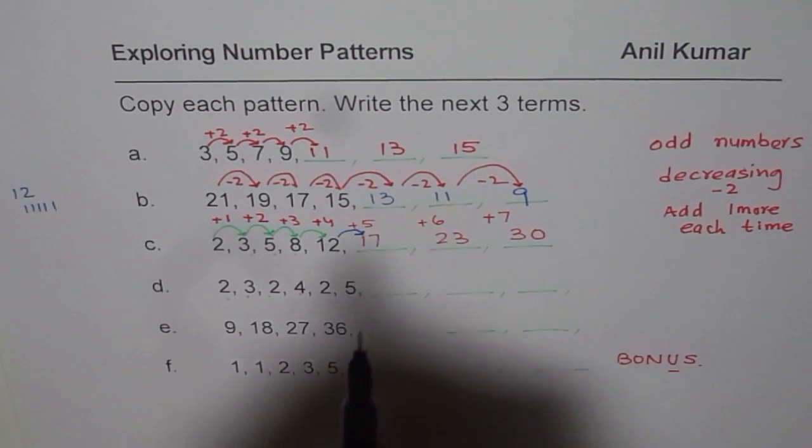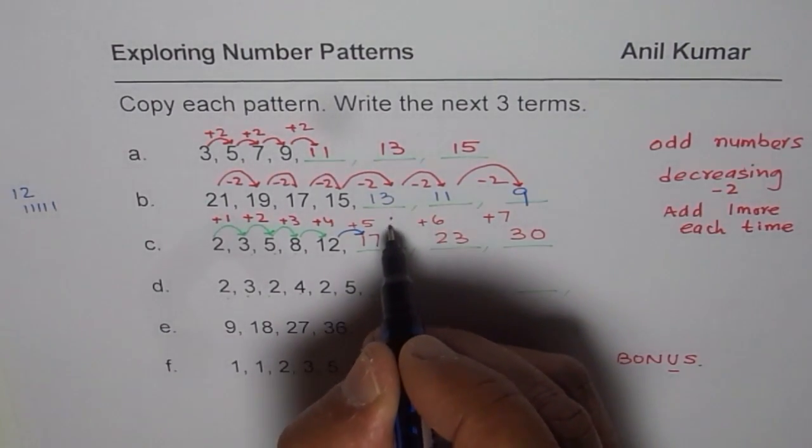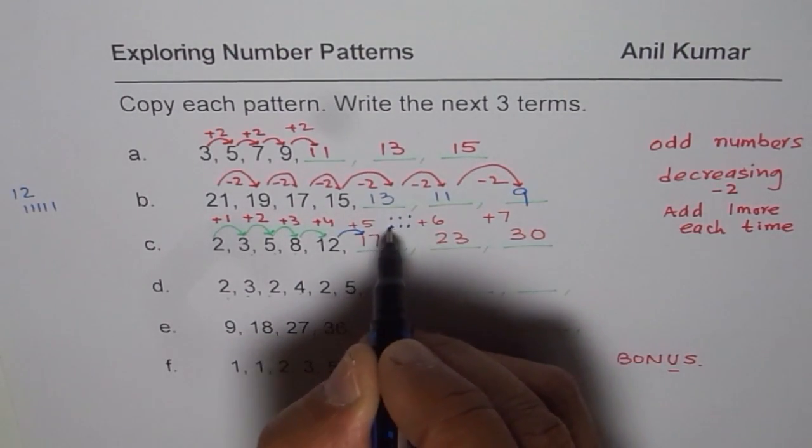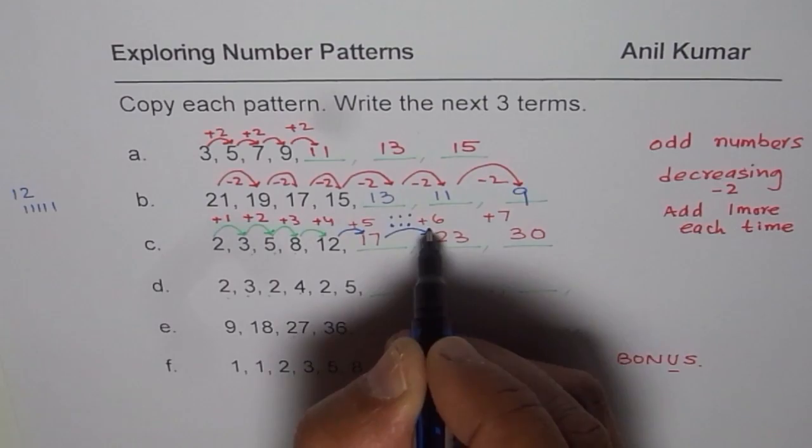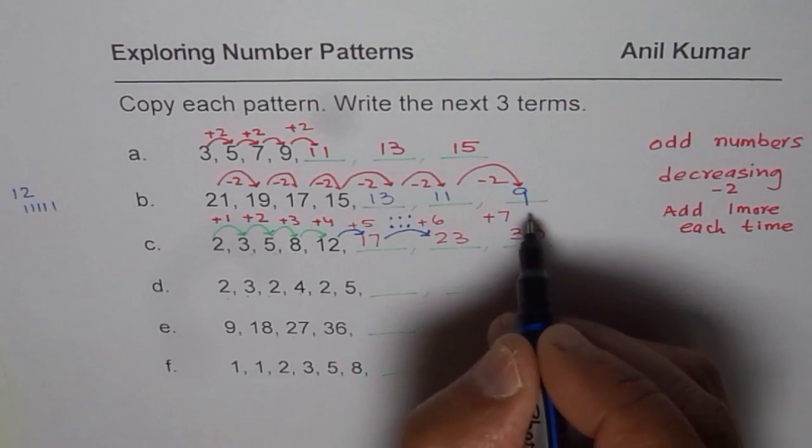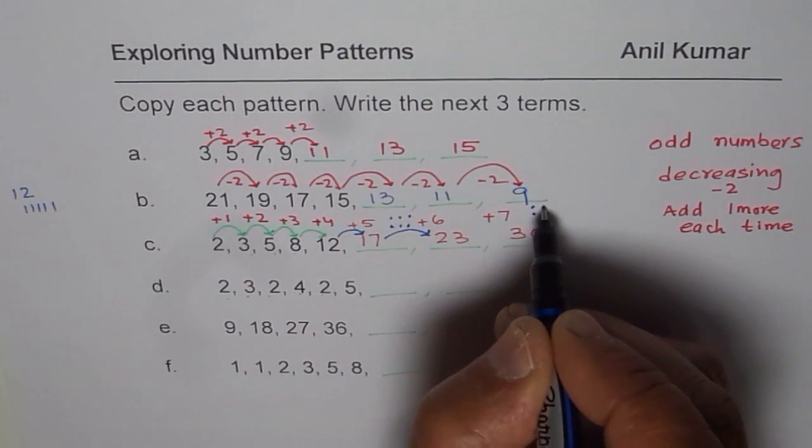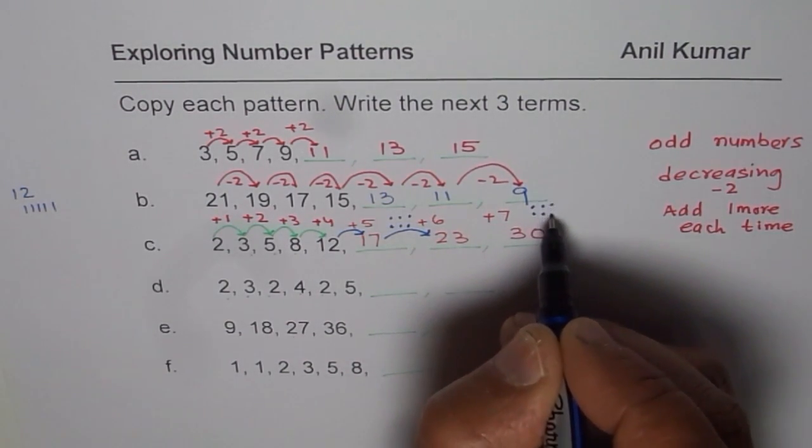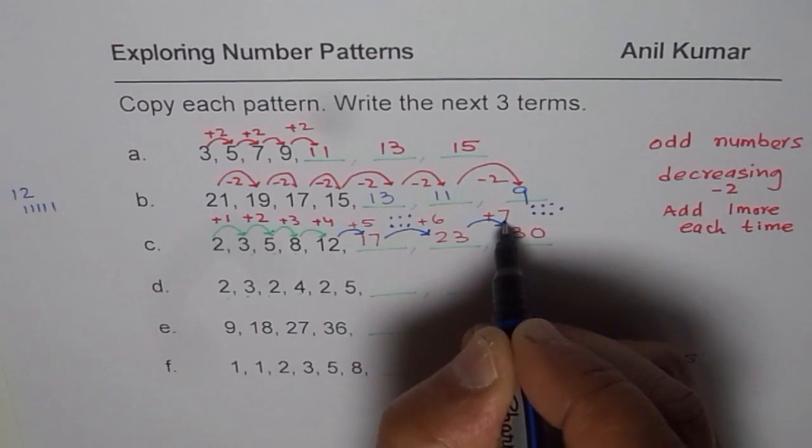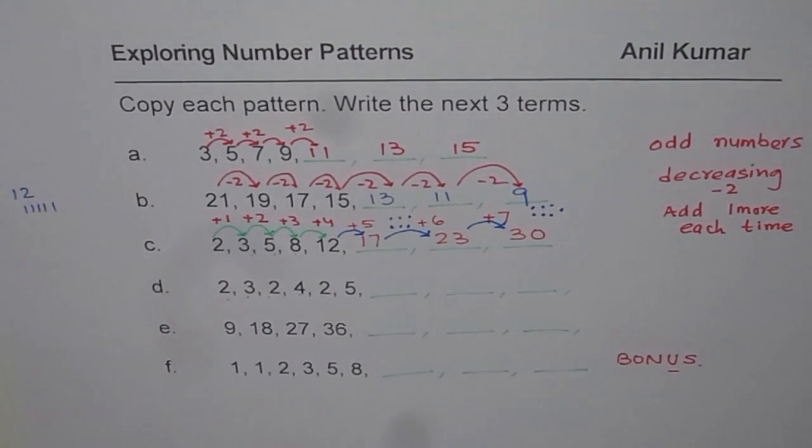And then you have to add 6. So 17, 18, 19, 20, 21, 22, 23. So adding 6, we get 23. Now to 27. This is 23, 24, 25, 26, 27, 28, 29, and 30. So these 7 dots, you added to get 30. So that is how you can get the next number. Right?